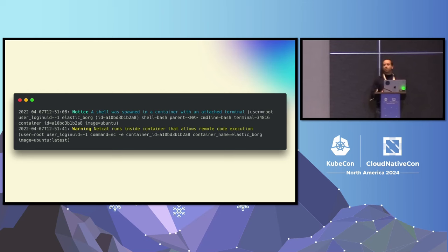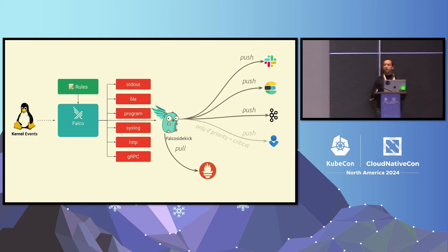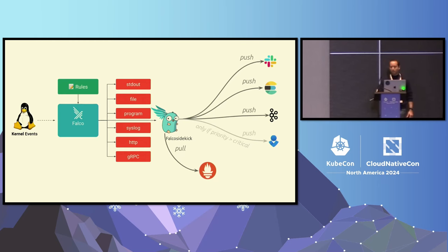This was great, but people started asking: what do I do with my events? I have them, so what can I do? Falco evolved to have a lot of channels that you can use to output your events. We have a lot of things you can build yourself. And we have a project called Falco Sidekick that has more than 60 integrations — to Slack, to your SIEM, to Elasticsearch databases, queues — whatever you can think of, there is an integration for it.